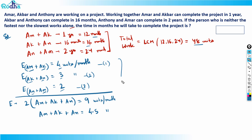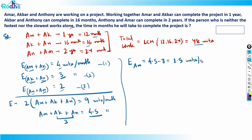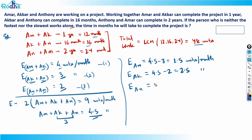Now I can get individual efficiencies. Efficiency of Amar = 4.5 minus (Akbar + Anthony) = 4.5 - 3 = 1.5 units per month. Efficiency of Akbar = 4.5 minus (Anthony + Amar) = 4.5 - 2 = 2.5 units per month. Efficiency of Anthony = 4.5 minus (Amar + Akbar) = 4.5 - 4 = 0.5 units per month.